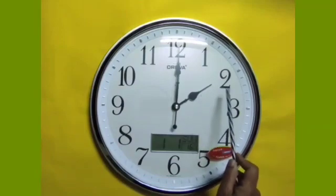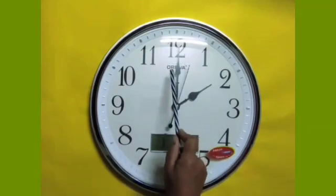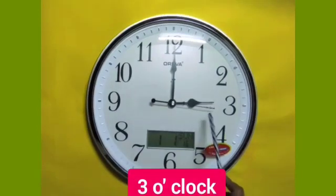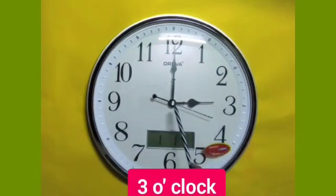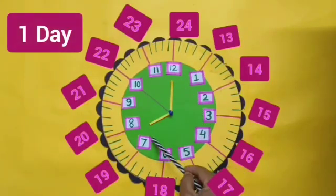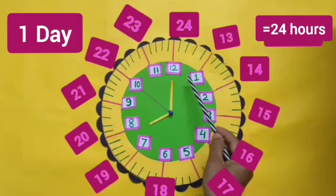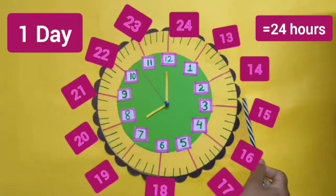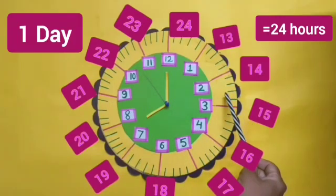Now, the minute hand is on 12 and the shortest hour hand is on 3. This indicates it's 3 o'clock. The shortest hand covers the two circles of this clock. One is from 1 to 12 and second round is from 13 to 24. It shows there are 24 hours in one day.